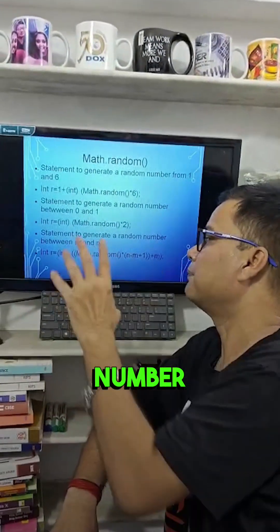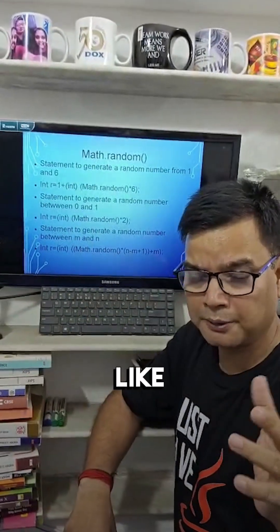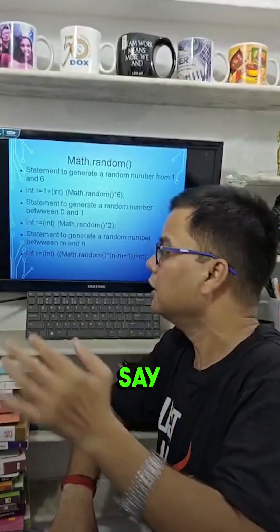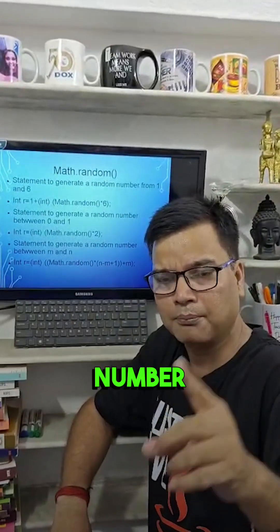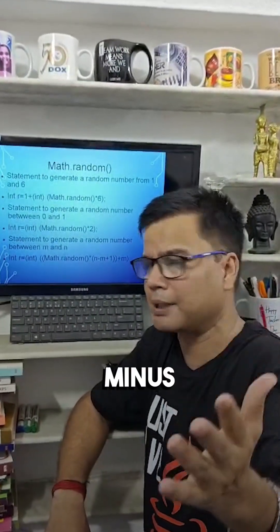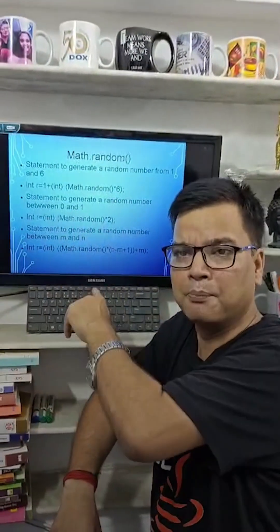If you want to generate a random number between m and n, like between 15 and 35 if I say. So it is Math.random into n minus m plus 1. n is the bigger number and m is the smaller number. So n minus m plus 1 plus m, the first value.